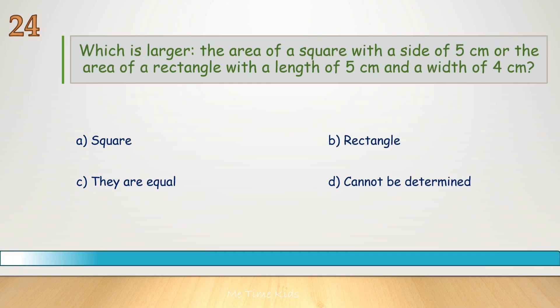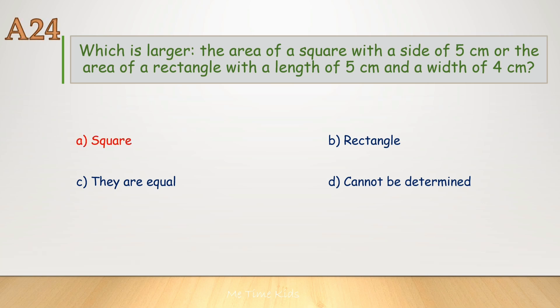Which is larger: the area of a square with a side of 5 centimeters, or the area of a rectangle with a length of 5 centimeters and a width of 4 centimeters? Correct answer is A, the square.